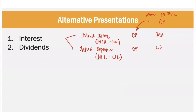Interest Expense comes normally from your Non-Current Liability, particularly your Long-Term Liabilities. These Long-Term Liabilities are in the part of your Financing. That's why if you have Interest Expense — since it is part of your income transactions, normally Current Asset and Current Liability, our rule is it is on your Operating. However, we take a look at the source of this Interest Expense. Since it comes from Non-Current Liability, it can also be presented in your Financing. So Interest Expense can either be presented as either Operating or Financing.